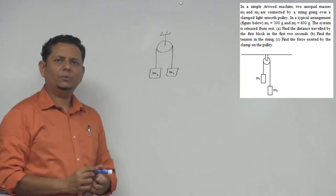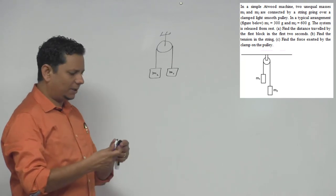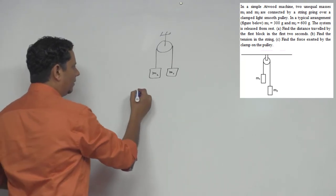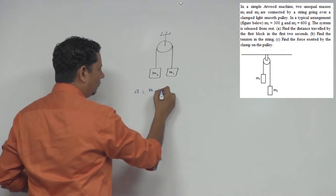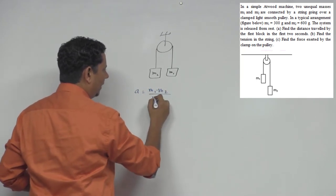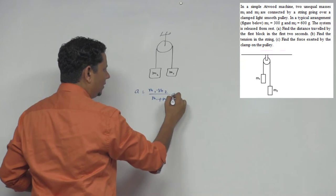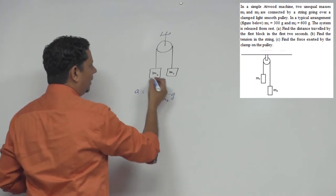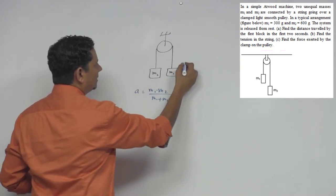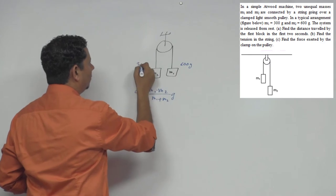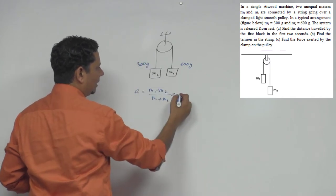And the formula we know - we are going to find the acceleration. Acceleration equals m2 minus m1 divided by m1 plus m2 times g. Here m1 is 600 grams and m2 is 300 grams, so you can calculate the acceleration.